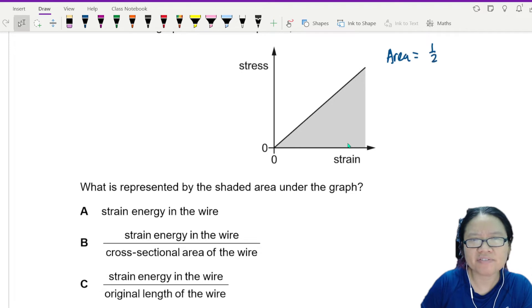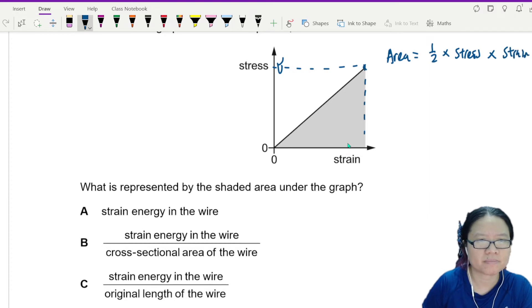I will take half times - this value here is the stress, right? Let's say stress is sigma, or rather I just write stress times strain area.